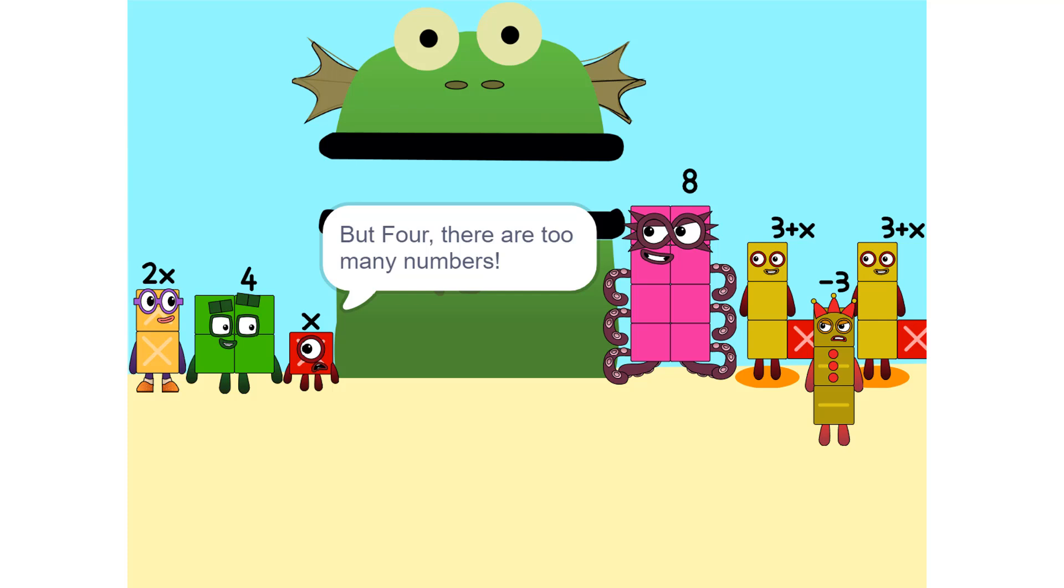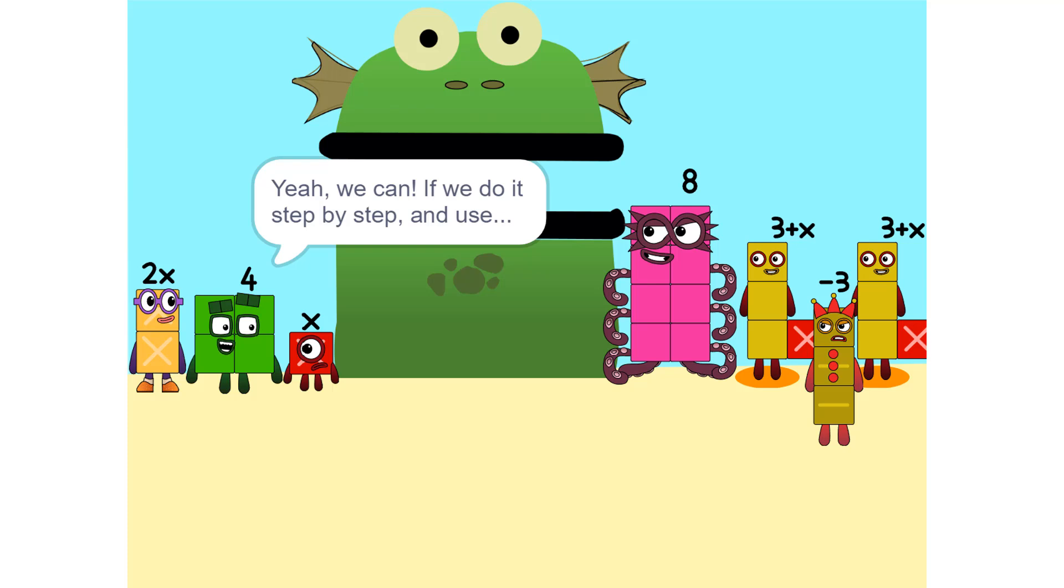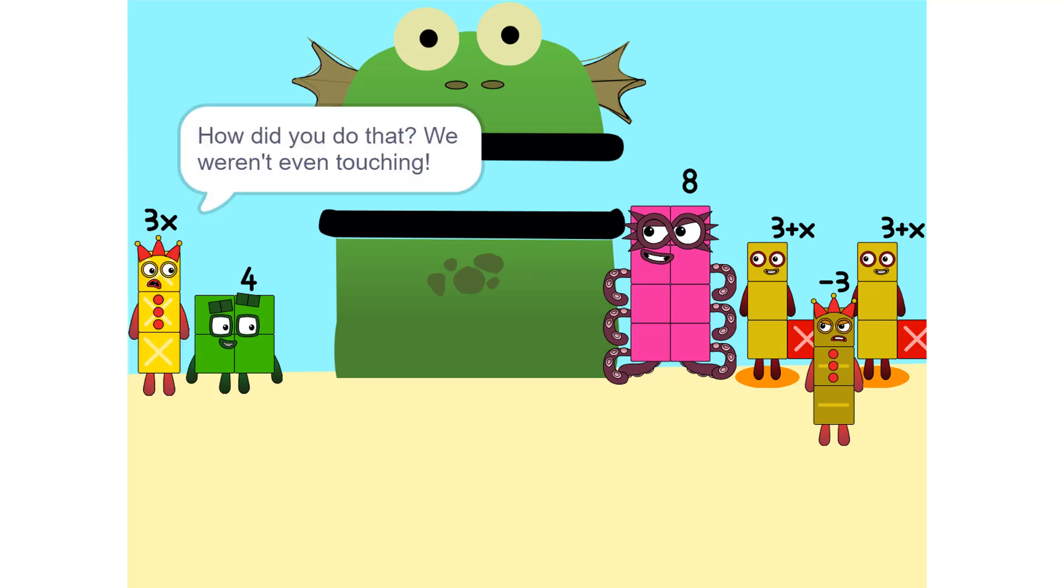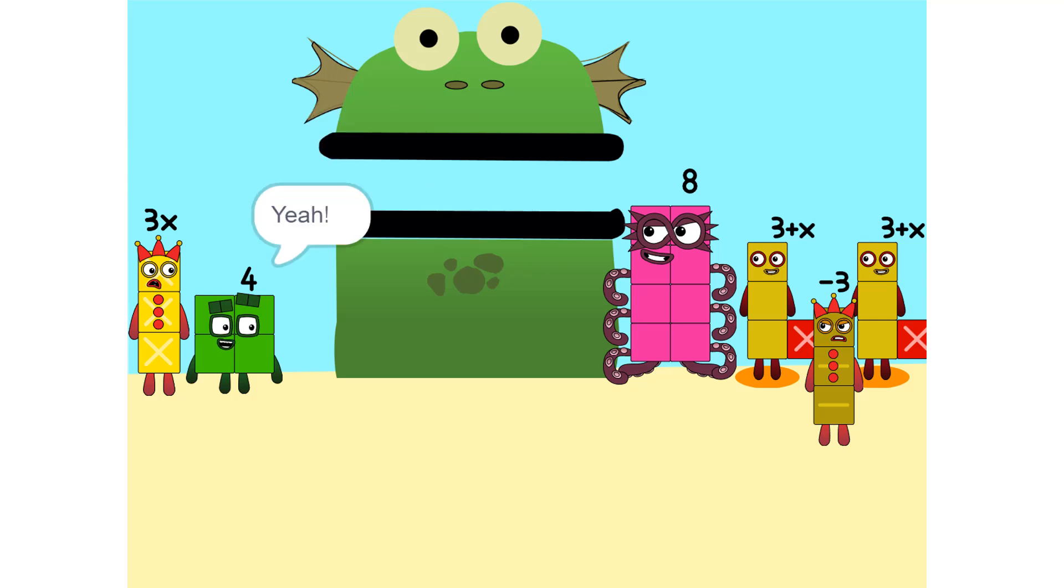So we add some more. 2 times X equals 2X. Nope. It's equal. Now we can figure out your value. But there are too many numbers, we'll never figure it out. Yeah, we can.